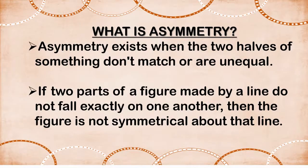Children, now let's see what is asymmetry. Asymmetry exists when the two halves of something don't match or are unequal. Means, if two parts of a figure made by a line do not fall exactly on one another, then the figure is not symmetrical about that line.